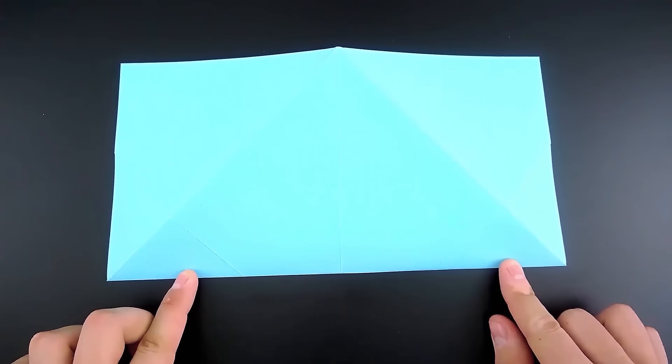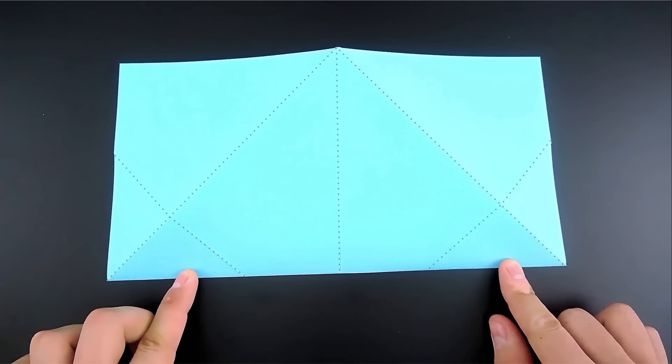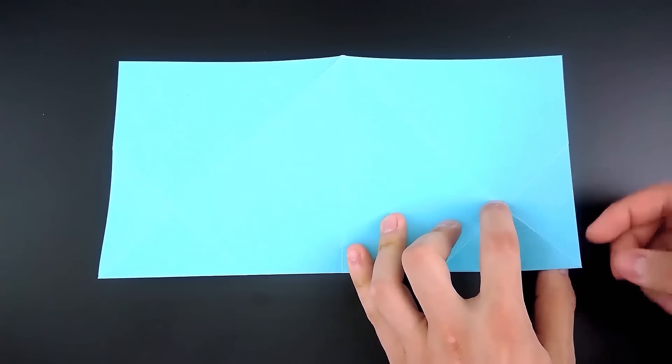Here are all the lines we have made so far. So, for the next step, we'll have to fold by connecting the top corners to the point where the lines intersect, just below. First, the right side.